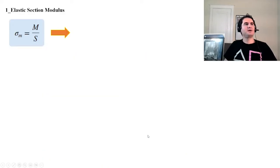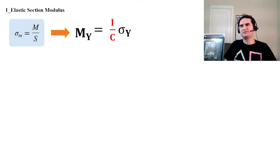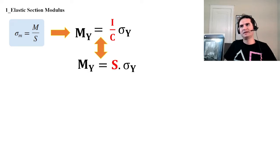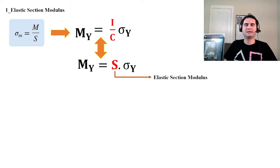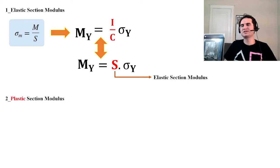So sigma maximum equals bending moment over elastic section modulus. One can say M_Y equals (I/C) times sigma_Y, and equivalently M_Y equals S times sigma_Y — these are identical to each other. Now let's jump to the plastic section modulus.